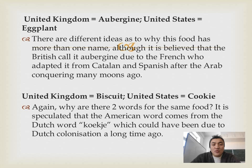United Kingdom: aubergine. United States: eggplant. There are different ideas as to why this food has more than one name, although it's believed that the British call it aubergine due to the French, who adopted it from Catalan and Spanish after the Arab conquering many moons ago.